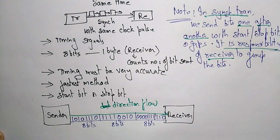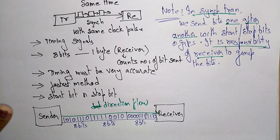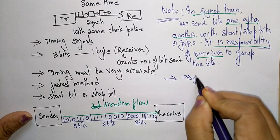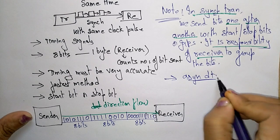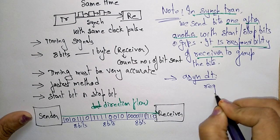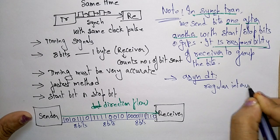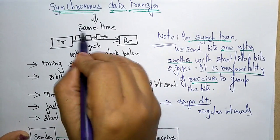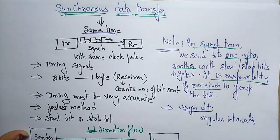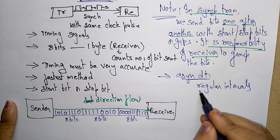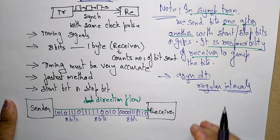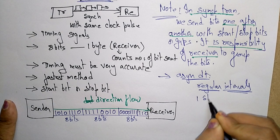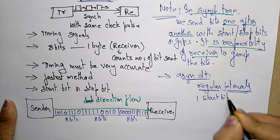This is synchronous data transmission. Now let us see what is asynchronous. Asynchronous data transmission occurs at regular intervals, unlike synchronous which happens at the same time. In asynchronous transmission, we send one start bit — the start bit indicates zero at the beginning of each byte.